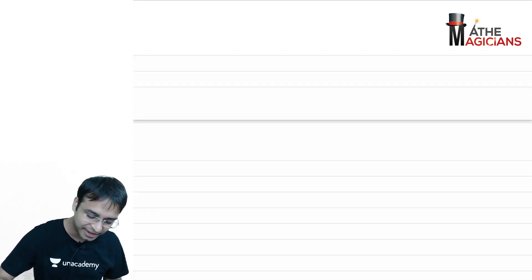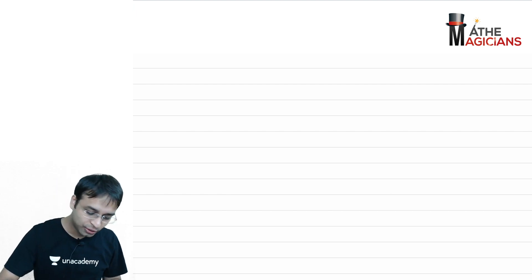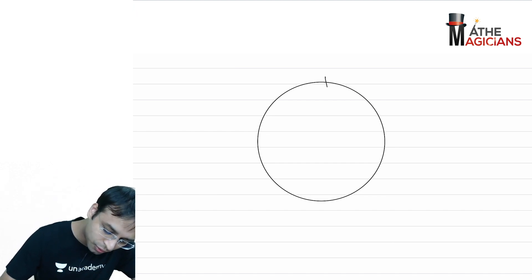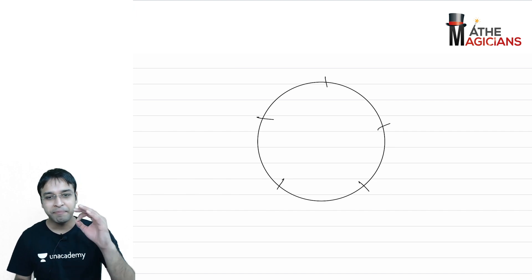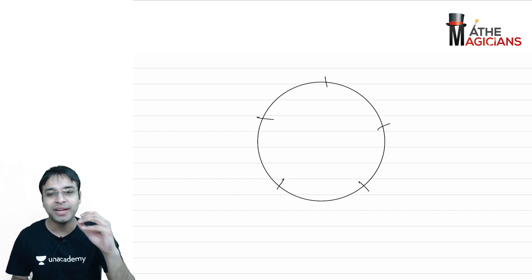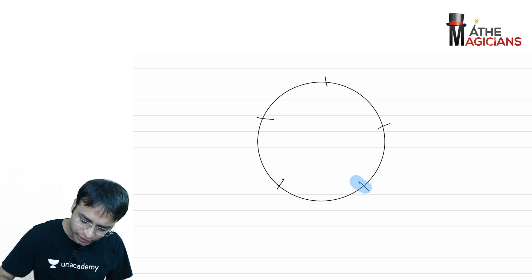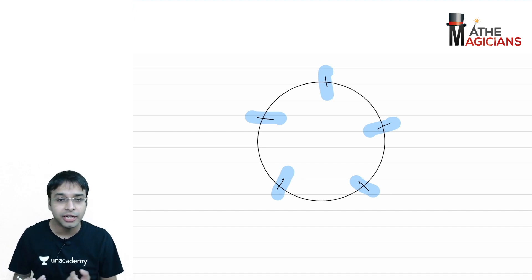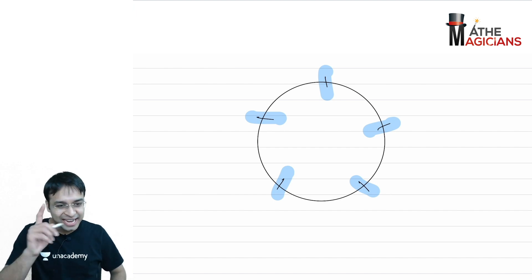Now let's talk about circular arrangements. We have the same five students, but now instead of a straight line, we need to arrange them in a circle. So here is a circle with five seats — seat one, two, three, four, five. Now, in how many ways can the first person be seated? You might say it's simple — the first person can be arranged in five ways. But wait, that's where the mistake is. Let's understand why.